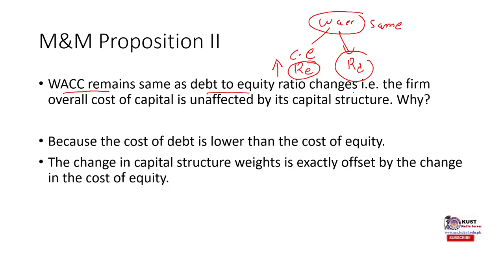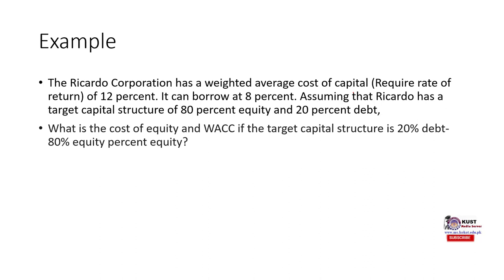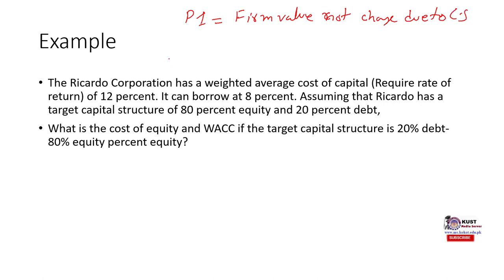So MM proposition one said that the value of the firm does not change due to change in capital structure, and proposition two says that WACC does not change due to change in capital structure. Now you know exactly why we call it the irrelevance theory.